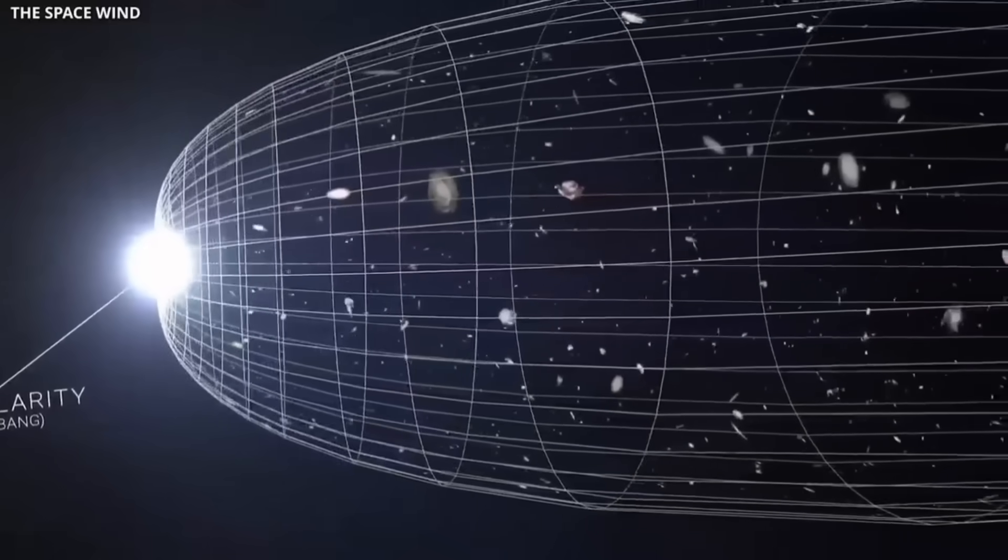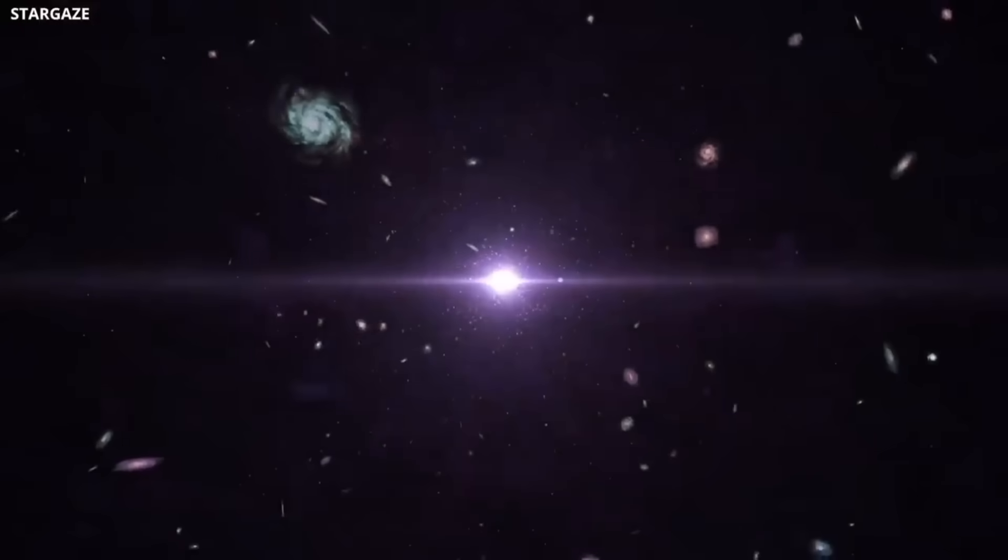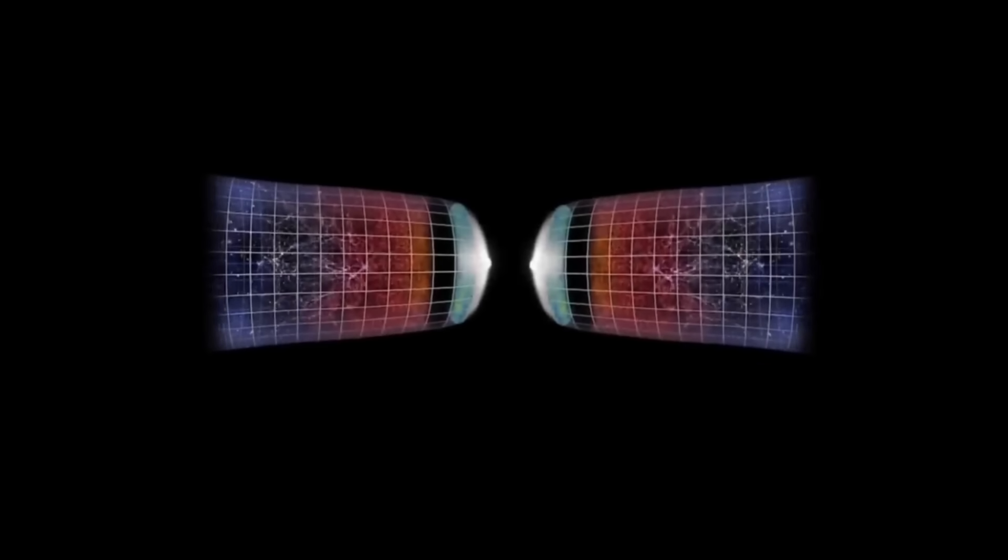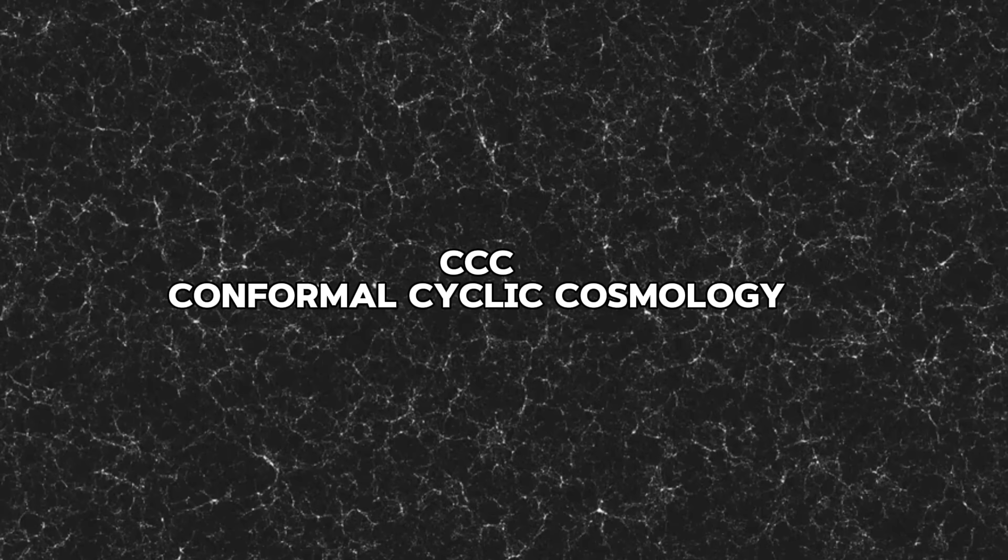This black hole universe idea suggests that the cosmos wasn't created from nothing, but is part of an ongoing cycle of collapse and rebirth, a loop that could go on forever. This theory also shares similarities with conformal cyclic cosmology proposed by Nobel laureate Sir Roger Penrose. According to Penrose, the Big Bang was not the absolute beginning of everything.